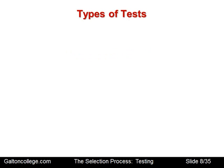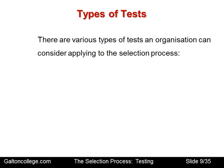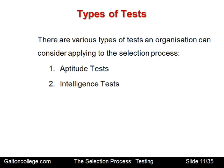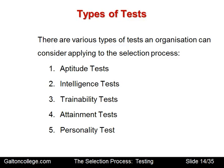There are various types of tests an organisation may consider when looking at the selection process. These include aptitude tests, intelligence tests, trainability, attainment, and personality. These are the various types of tests that may be conducted on candidates, so when someone applies for a job they may have various tests to complete to assess their suitability in the context of the requirements of the job.